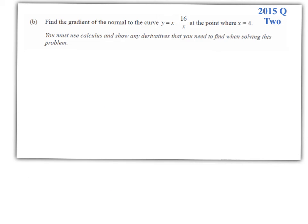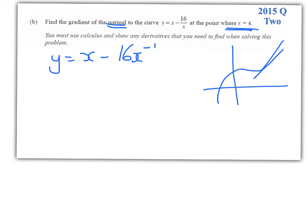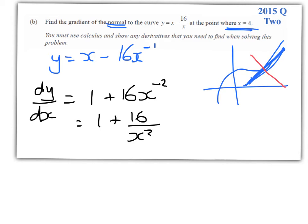This one's an achieve question. We've got y = x - 16x⁻¹. We're asked to find the gradient of the normal at the point where x is 4. So remember that derivative gives me the gradient of the tangent at a point and the normal line is just perpendicular to the tangent. So step 1 is to find the gradient of the tangent. dy/dx equals 1 + 16x⁻² which is 1 + 16/x² which at x = 4 is equal to 1 + 16/16 which is 2.